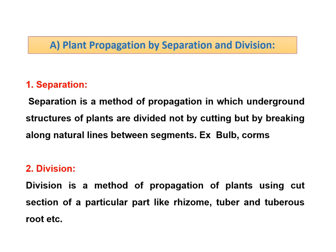The second type of specialized plant parts involves division. Division is a method of propagation of the plant using cut sections of a particular part like rhizome, tuber, tuberous root, etc. In division, they again have nodes, internodes, and a number of buds, and on the nodes or internodes we divide it and along with three or four buds we can plant them for further multiplication.